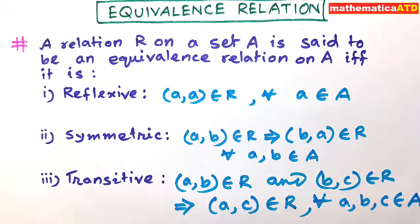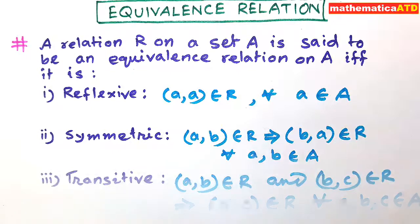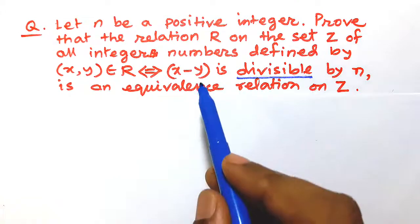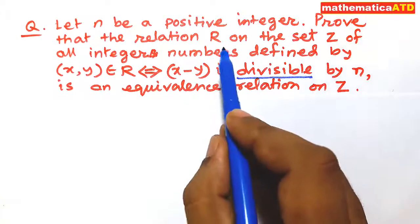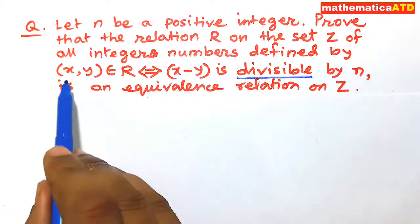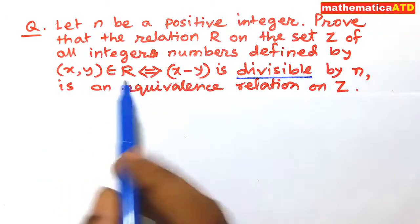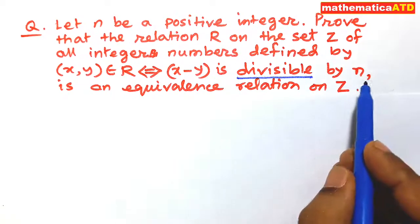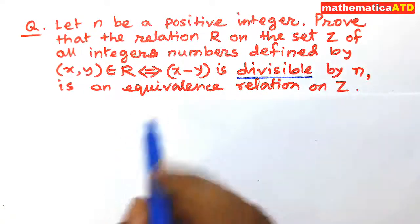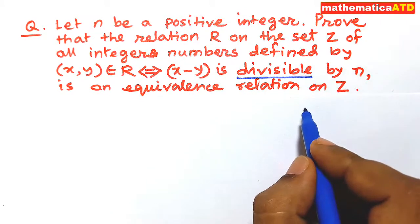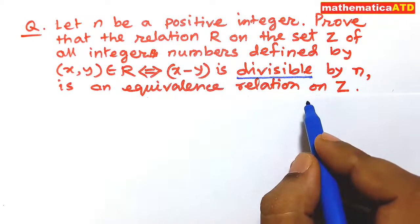Now we shall give an example on equivalence relation. Let n be a positive integer. Prove that the relation R on the set Z of all integers, defined by: the ordered pair (x, y) belongs to R if and only if x minus y is divisible by n, is an equivalence relation on Z.